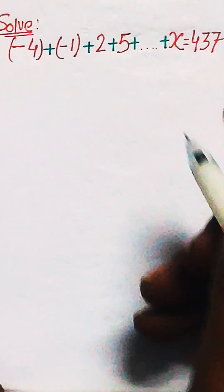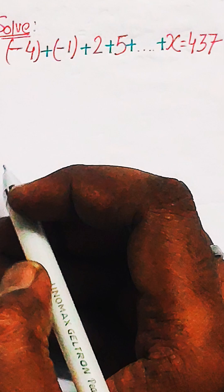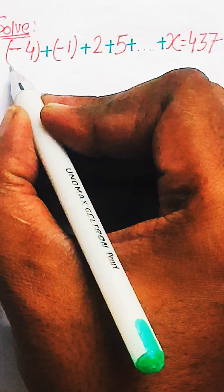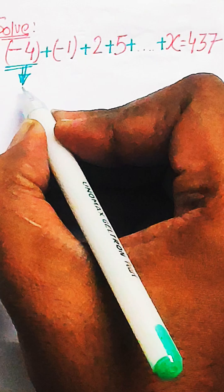This is a question of arithmetic progression where the first term is minus 4, then minus 1, then 2, 5, and then the last term is x all added together and the sum given is 437.